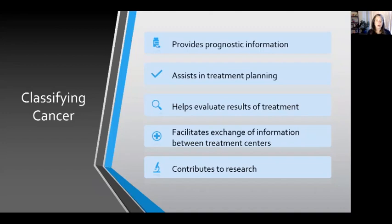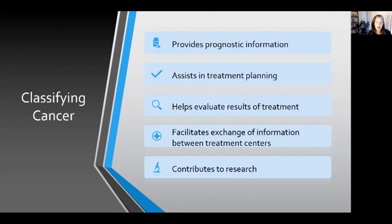Once a cancer diagnosis has been obtained, it's important to classify the cancer. This is important because it provides prognostic information for the patient and the provider, helps the provider plan treatment that will be most effective, helps to evaluate how well treatment is working, and facilitates the exchange of information between treatment centers and contributes to research so that other centers can share what is working well.